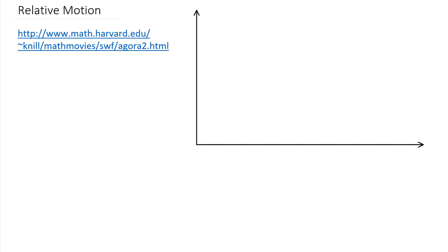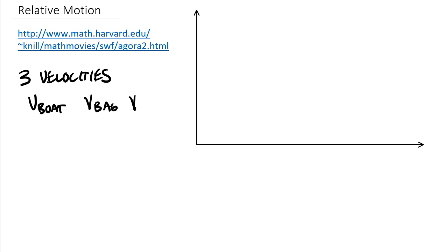In that scene they're debating relative motion — trying to figure out where a bag dropped from a ship's mast will fall: ahead of the mast, behind it, or at its base. If we separate out the different terms, there are three velocities we're looking at, and this is true of all relative motion problems. One is the velocity of the boat, another is the absolute velocity of the bag, and the third is the velocity of the bag relative to the boat. Absolute means measured from a non-moving reference point.